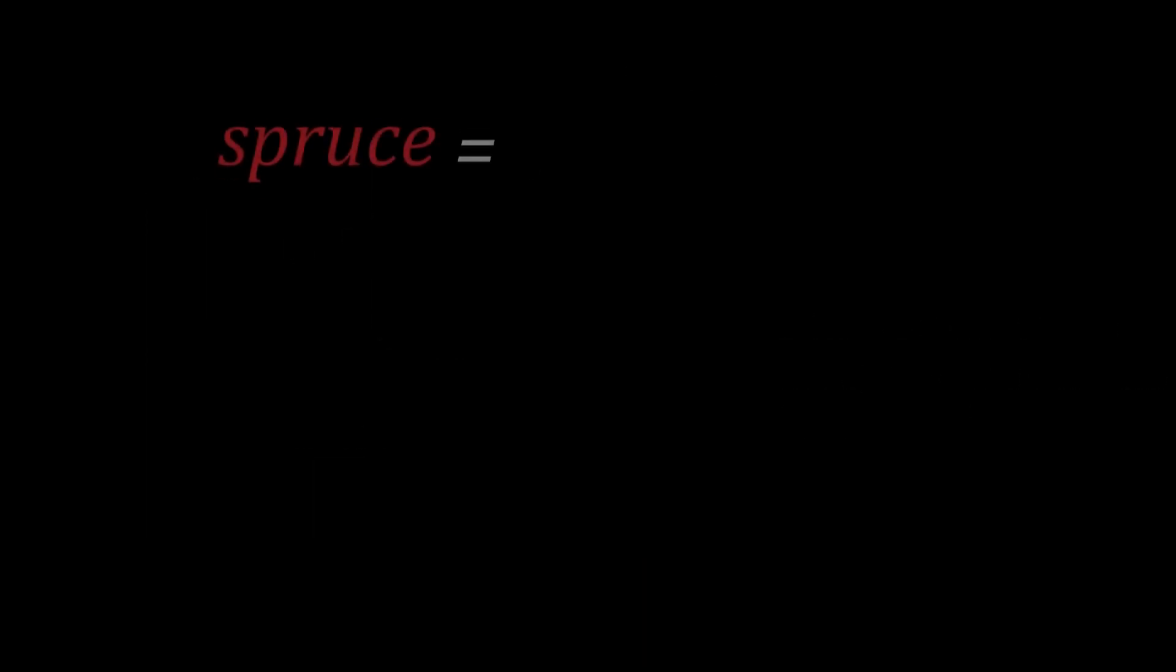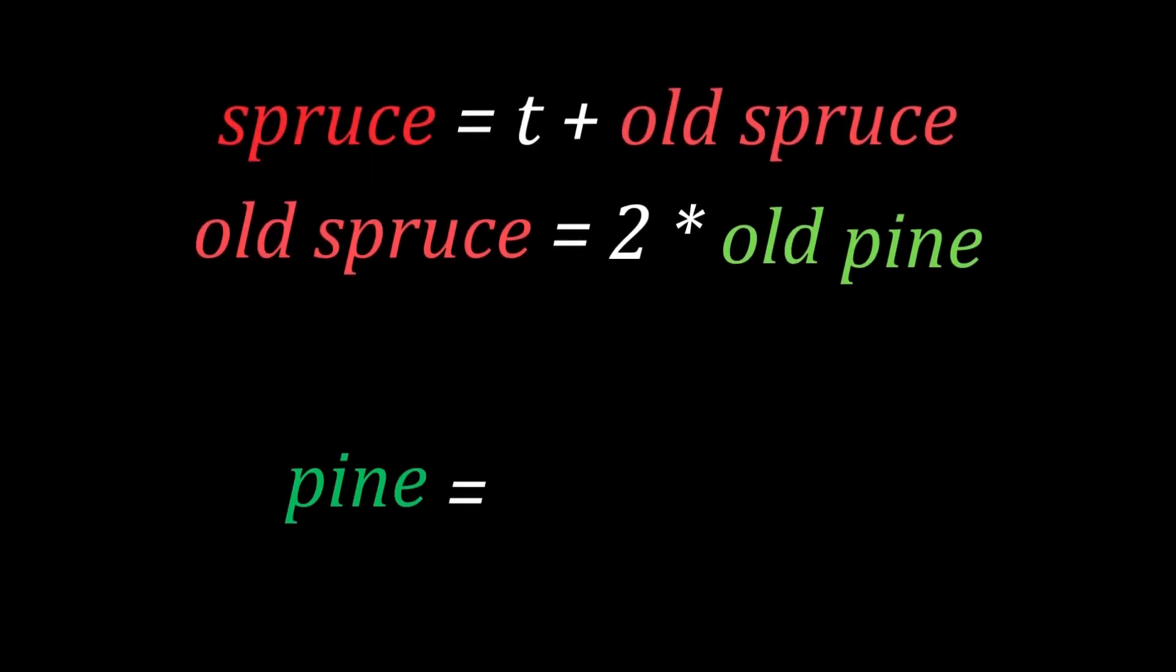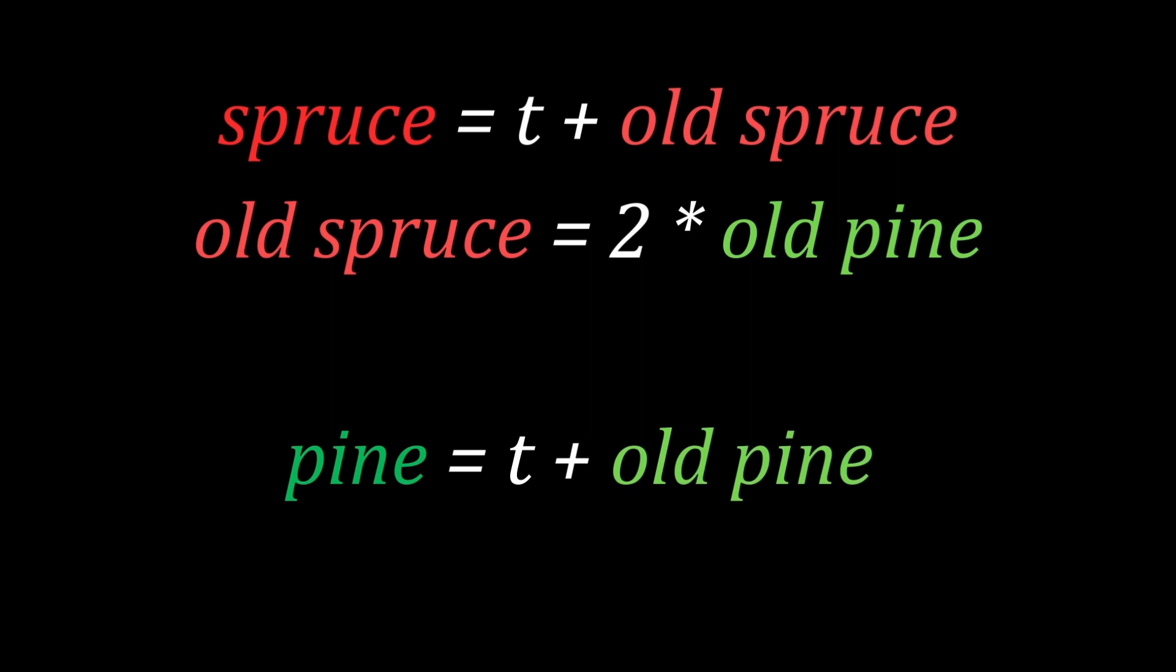We now have the equations: spruce = t + old spruce and pine = t + old pine, where t is the amount of time that has passed. But wait,